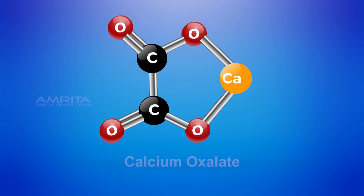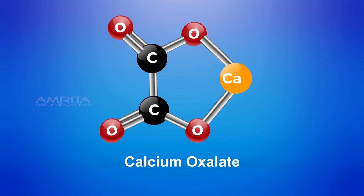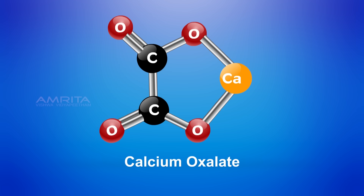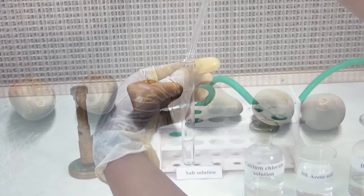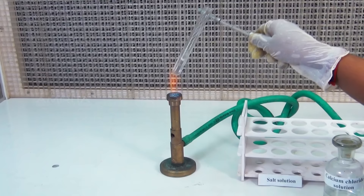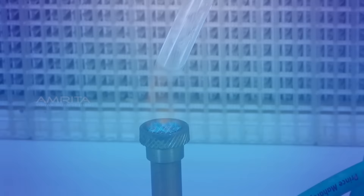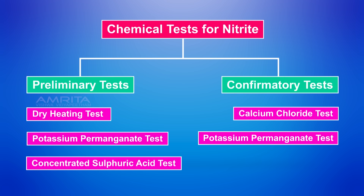The oxalate ion reacts with a calcium metal ion to form an insoluble precipitate of calcium oxalate, which is a primary constituent of most of the common kinds of kidney stones. Our aim here is to test for the presence of oxalate ion in a given salt. The tests to determine the presence of oxalate ion are preliminary tests and confirmatory tests.